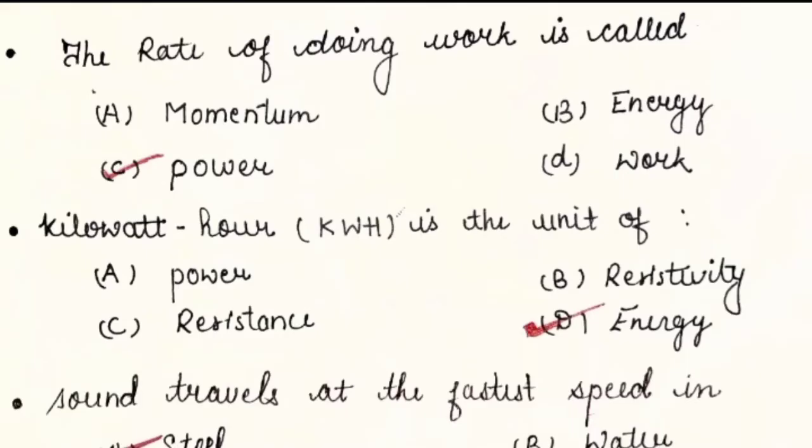Hello everyone, in this video we are going to discuss questions related to physics. So without wasting much time, let's get started. The very first question is: the rate of doing work is called A) momentum, B) energy, C) power, and D) work. And the answer is C) power. Power is equals to work upon time.